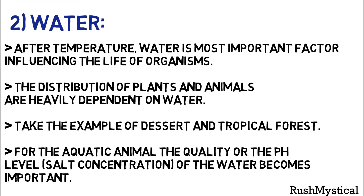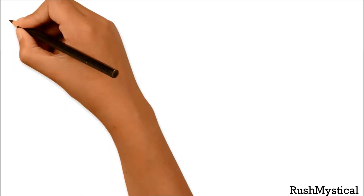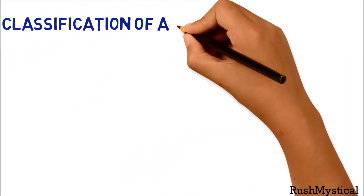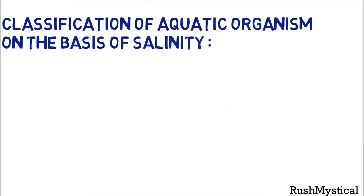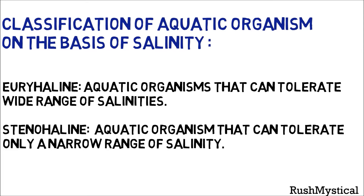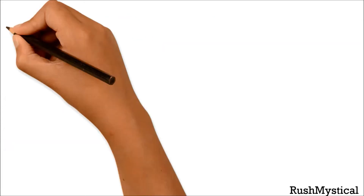After temperature, water is the most important factor influencing the life of organisms. The distribution of plants and animals is heavily dependent on water — take the example of desert versus tropical forest. For aquatic animals, the quality or pH level and salt concentration of the water becomes important. On the basis of water, aquatic animals are divided into euryhaline, which can tolerate a wide range of salinities, and stenohaline, which can tolerate only a narrow range of salinity.